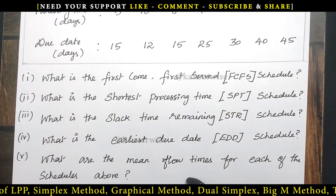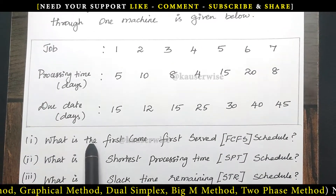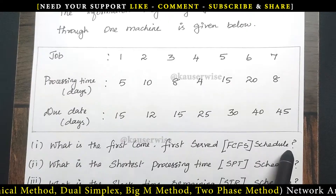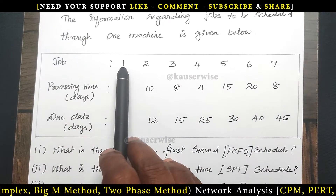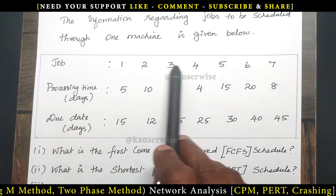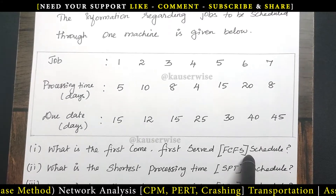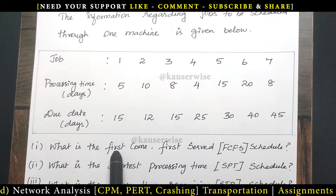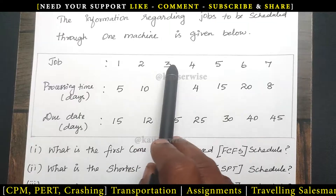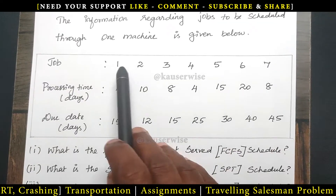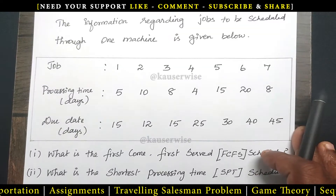We are going to see the calculations one by one. The first one is: what is the first come first served schedule? Here we have 7 jobs. According to the first method, we have to assign first come and first served schedule: 1, 2, 3, 4, 5, 6, 7. This is the first come and first served schedule.